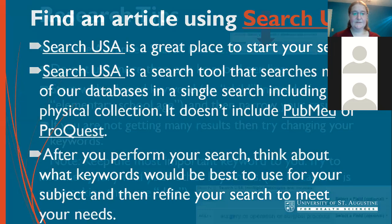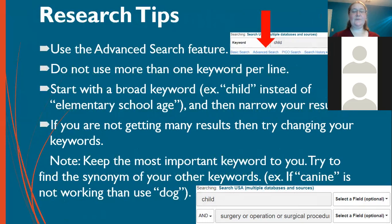Remember to use the advanced search feature and be careful when choosing your keywords. Authors get to pick their keywords for their articles, and you don't know what's in another person's mind. Maybe you think 'senior' is a great keyword, but most authors use 'elderly care.' Or you might search for 'elementary school age children' when the author just used 'child' or 'children.' So it's a good idea to start your search as broad as possible and then try to narrow down from there.